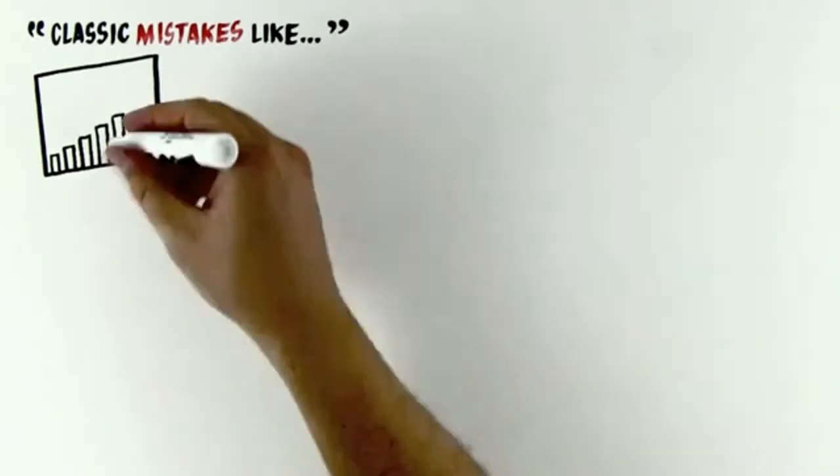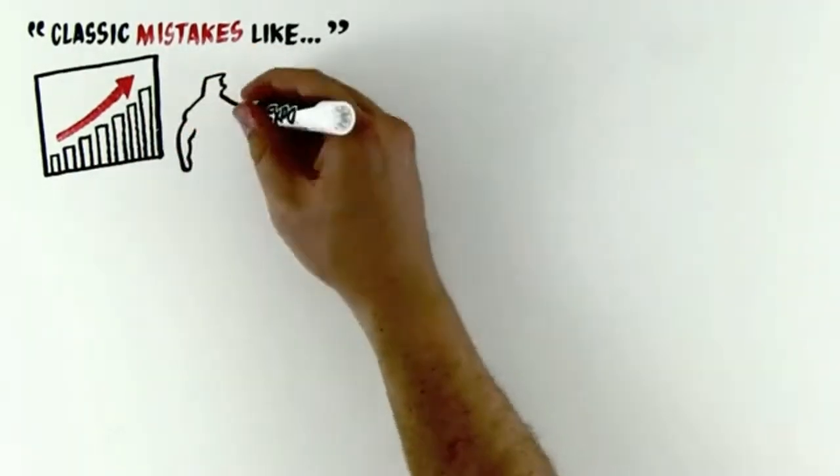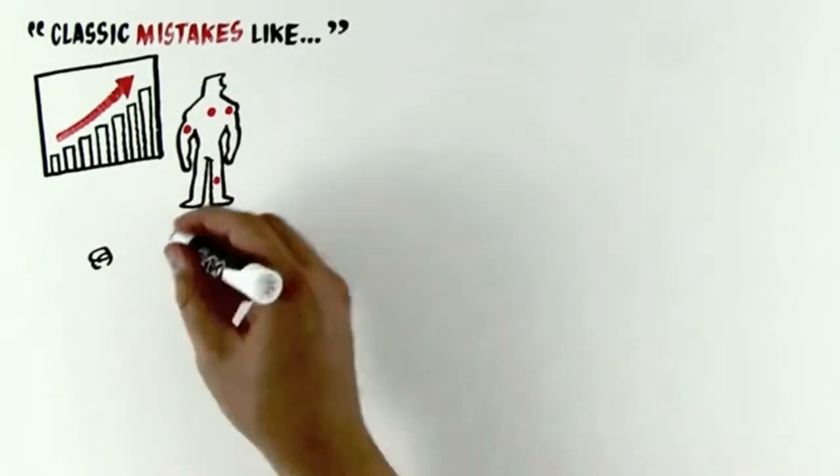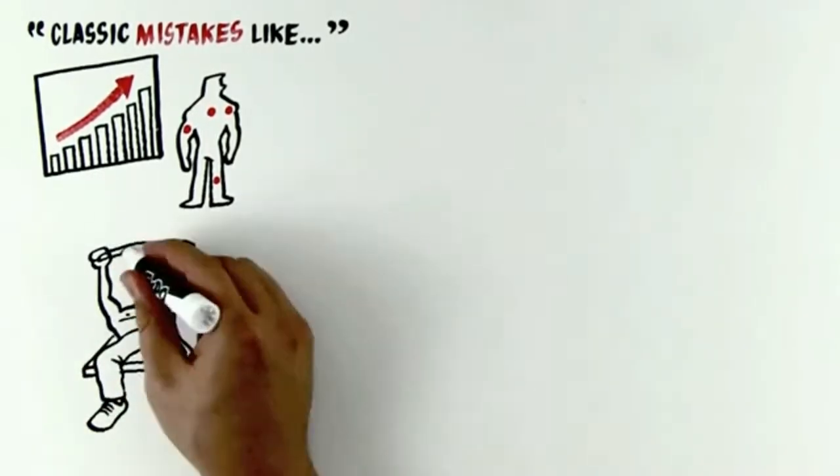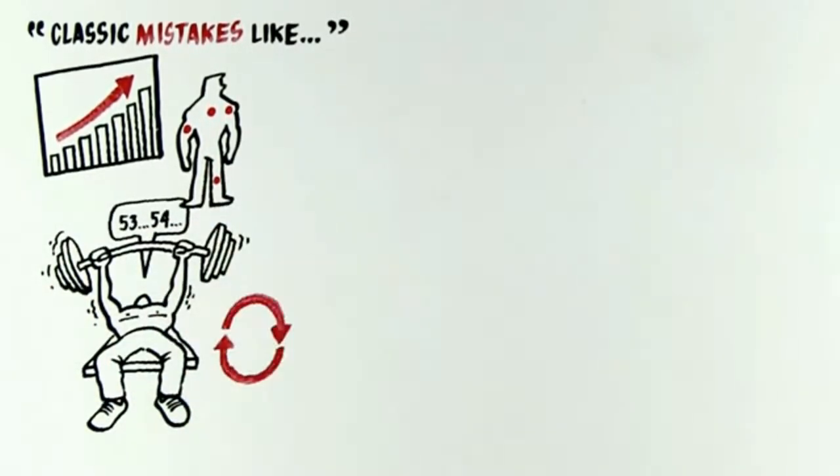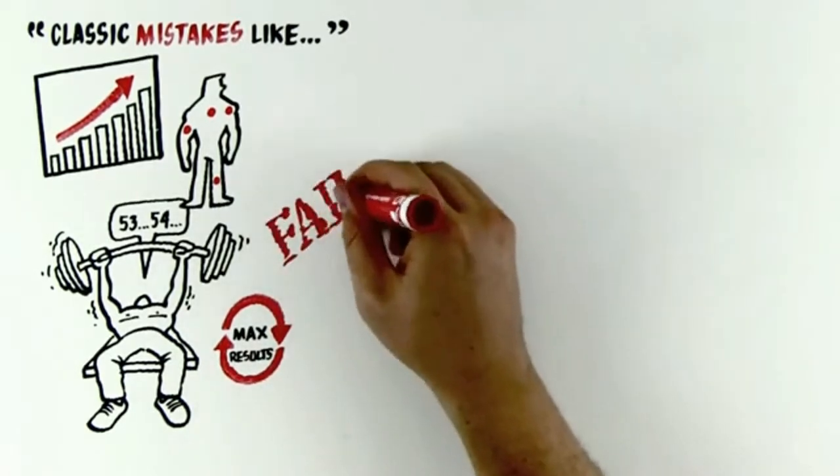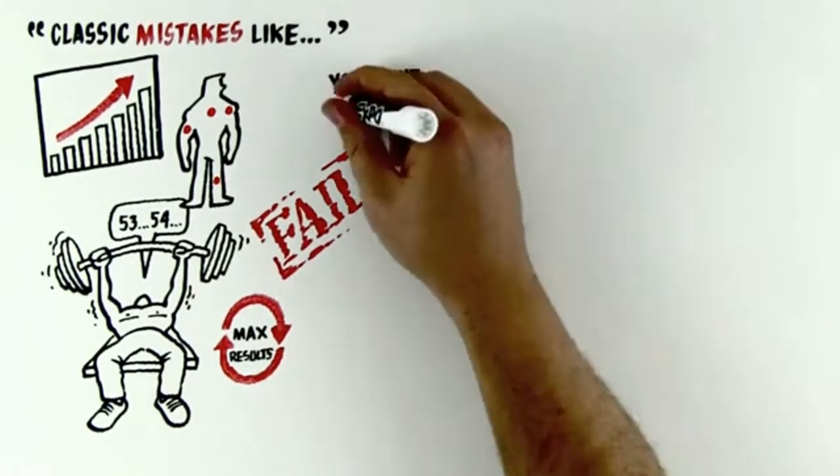Making classic mistakes like ignoring the law of progressive overload, not training each muscle group frequently enough, doing too many sets and reps, and not cycling their training for maximum results. And you guessed it, they fail, but you don't have to.